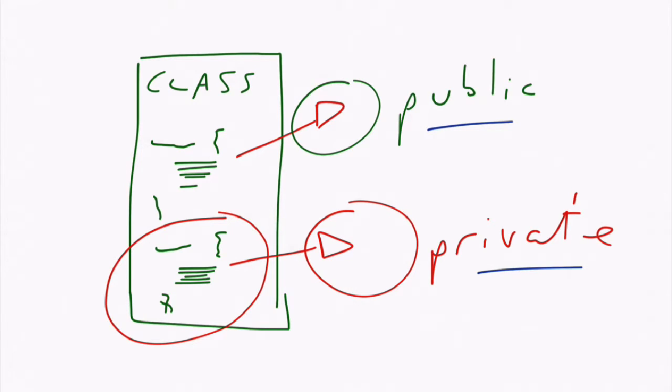So public means that anything outside of this class can access that method, those properties, whatever is inside it marked with public. Anything outside of the class cannot access anything that says private. Private is only for the use of the class itself.